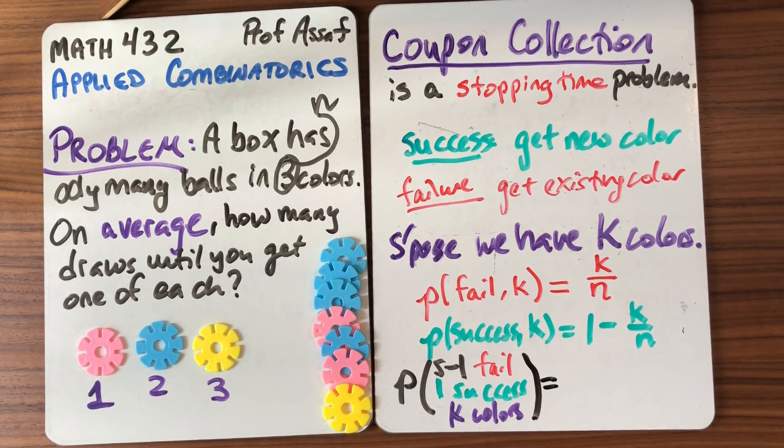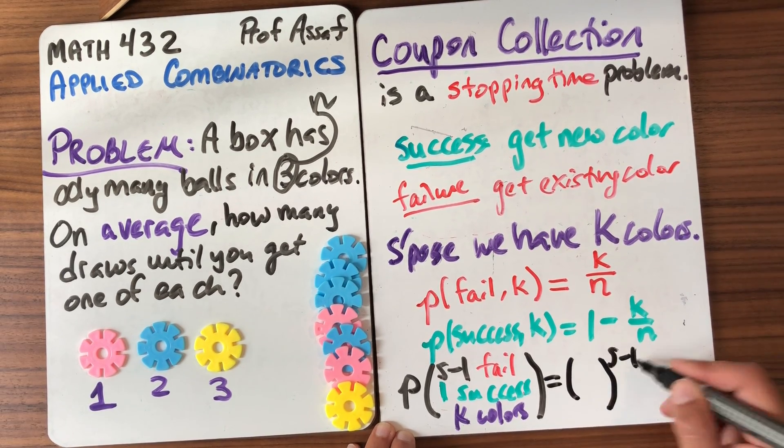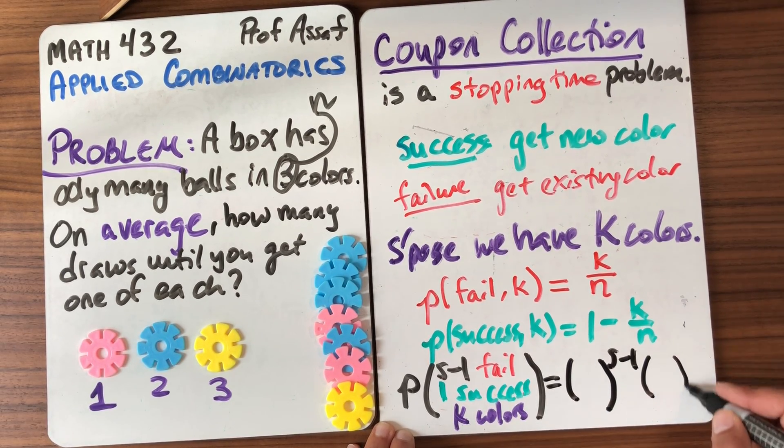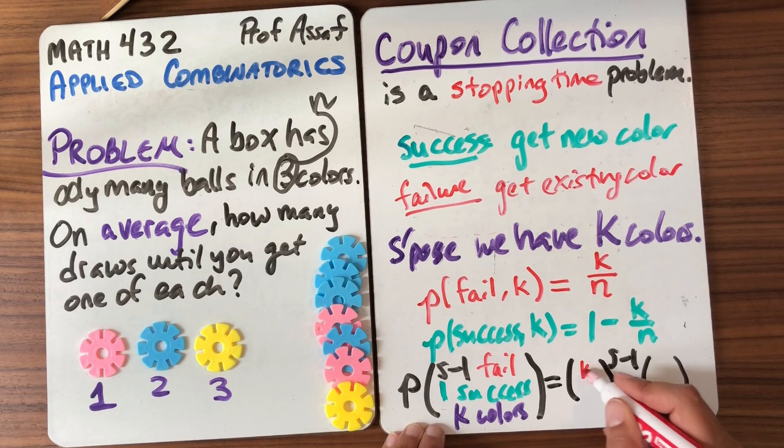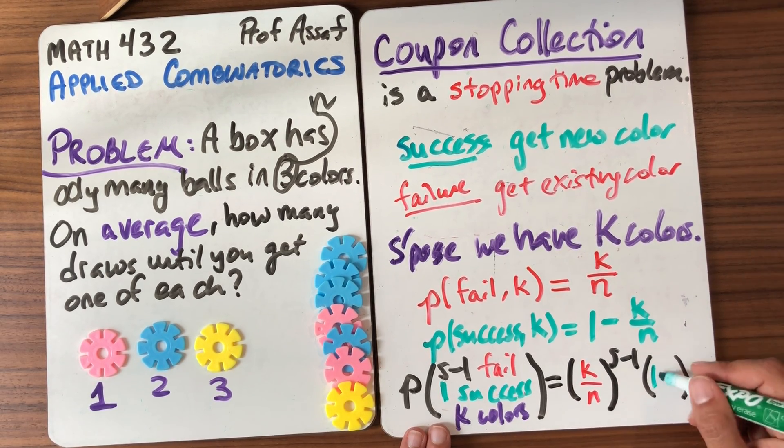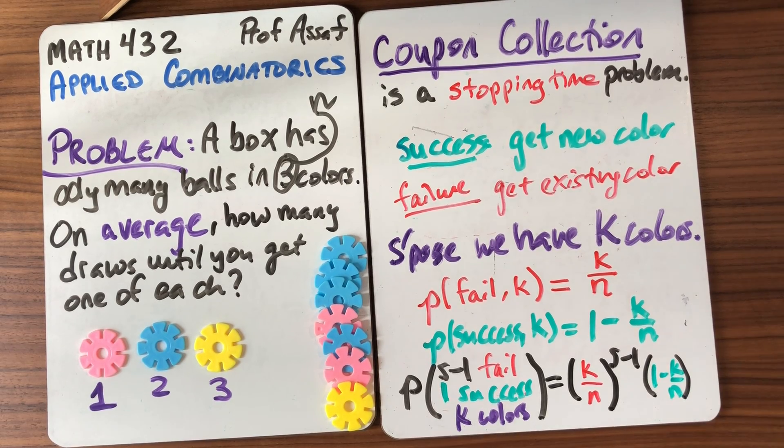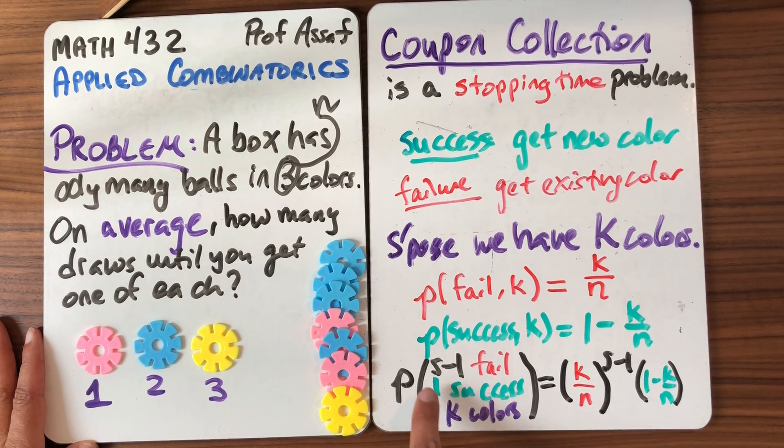Well, it's going to be the probability that I fail s minus 1 times the probability that I succeed one time. So we can just put in the probabilities we've already worked out. The probability of the failure is k over n, and the probability of success is 1 minus k over n. So this tells me, this is the probability that after s minus 1 failures, I get 1 success.